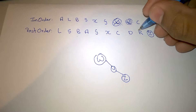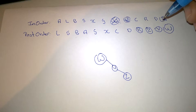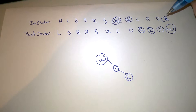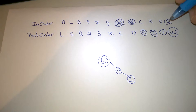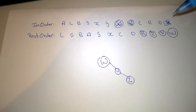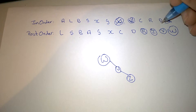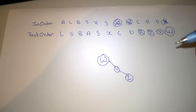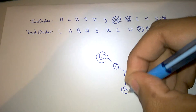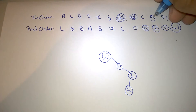The next value is R. So we look to see who is the parent node of R. In this case, the parent node of R is Z, and R is to the left of Z. So we put R to the left of Z. Then we take R and remove R.